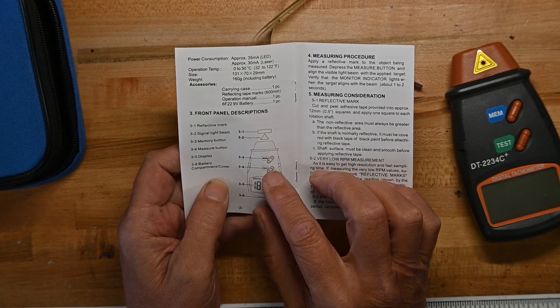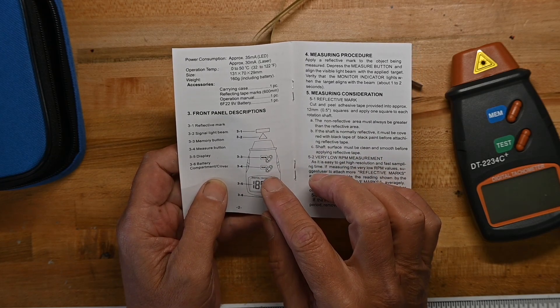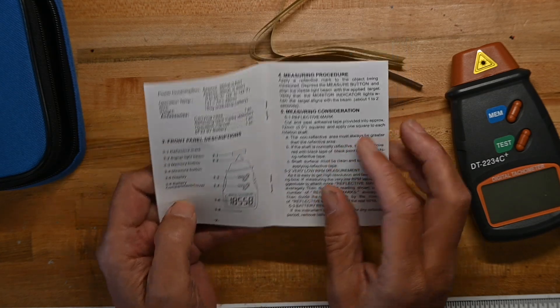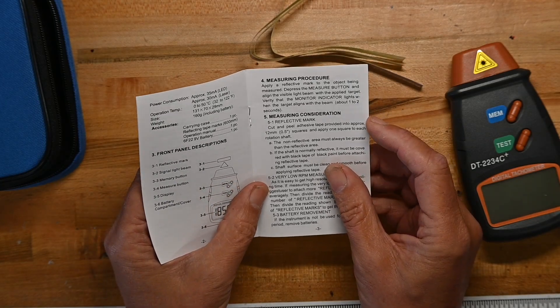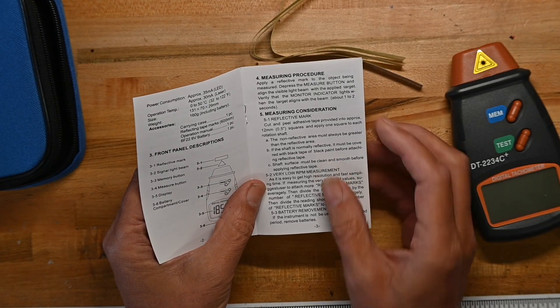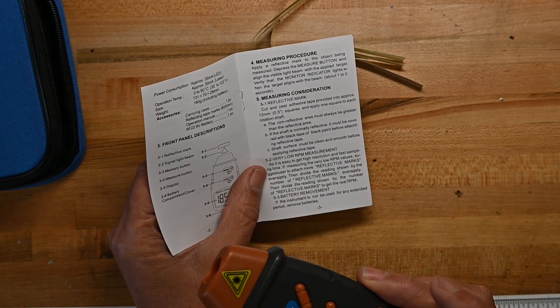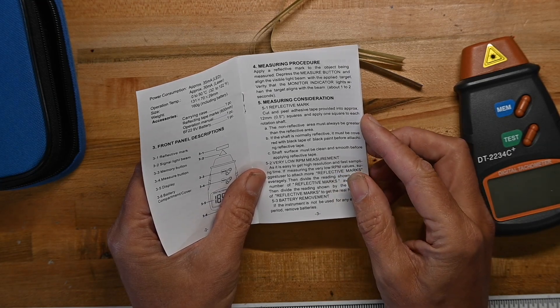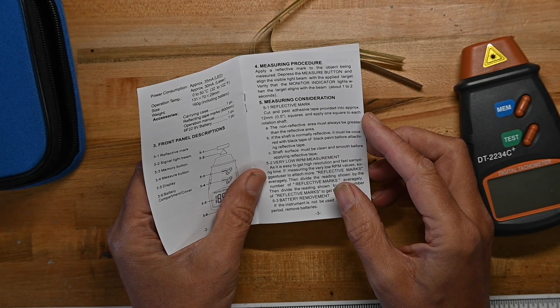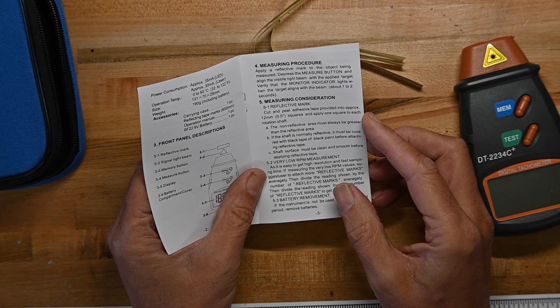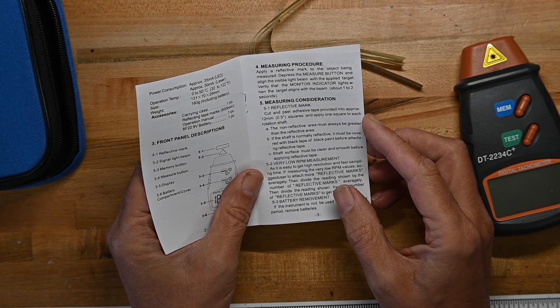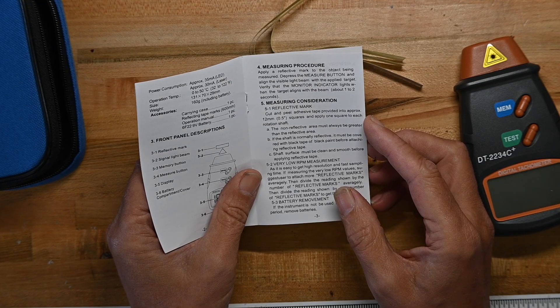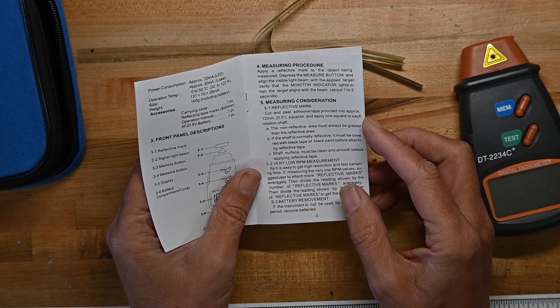Where's the measure button? Oh, where it says test. And the battery compartment on the back. Apply a reflecting mark to the object being measured. Depress the measure button. You're a bad person, now it's depressed. And there's a visible light beam which shows you where the laser or LED is pointed. 12 millimeter squares, half inch squares.